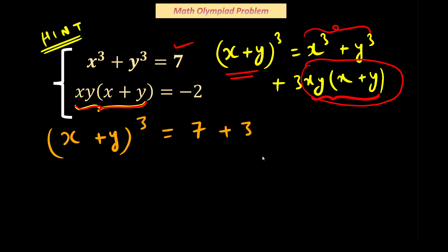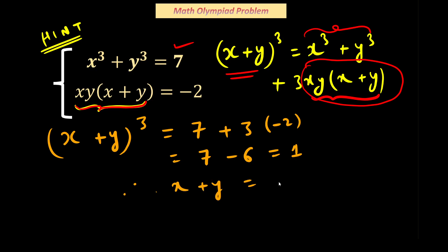Plus 3 times the value of xy(x + y), which is -2. So we get 7 + 3×(-2) = 7 - 6 = 1. So (x + y)³ = 1, and therefore x + y = ∛1 = 1. We have found the value of x + y as 1.